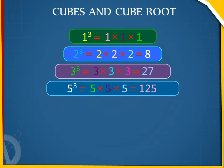The above statements can also be expressed by saying that the cube of 1 is 1, the cube of 2 is 8, the cube of 3 is 27, and the cube of 5 is 125.